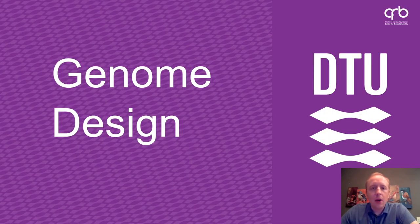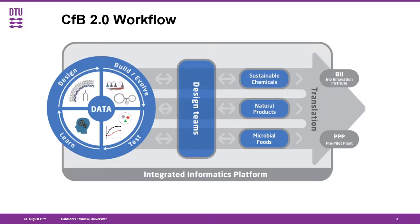So what is the genome design group and how does it relate to other activities at the Center for Biosustainability? The genome design group is part of the design, build, test, learn units of the CFB, which are tasked with supporting the strain design teams in their applications for sustainable bioproduction. The genome design group specifically is focused on making predictions of strain phenotypes in order to empower the workflows used by the strain design teams.